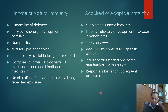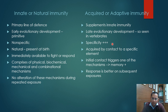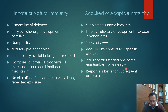When we look at acquired or adaptive immunity, it supplements the already present innate immunity. It is a late evolutionary development, seen in vertebrates, and it is specific — that is the major difference between innate and acquired immunity. It is acquired by contact with a specific element and is therefore specific against that element. The initial contact triggers a memory response, and the response is better on subsequent exposure because of that memory.